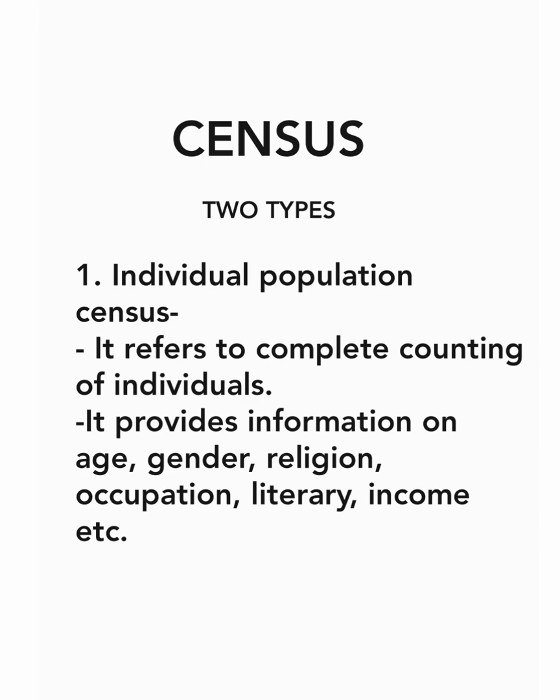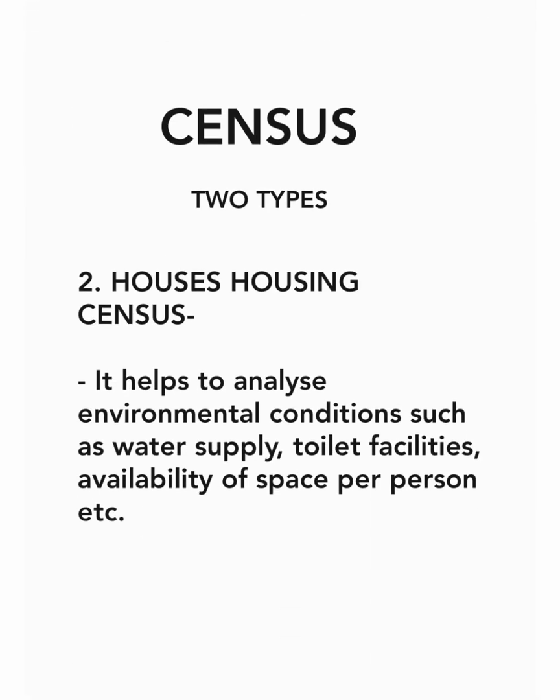The second type is housing census. This covers the condition of a house — the condition of water supplies, the condition of facilities and whether they can be accessed, and the availability of space per person. When we talk about quality of life, we can see these very important factors: how many people live there and what their lifestyle is.